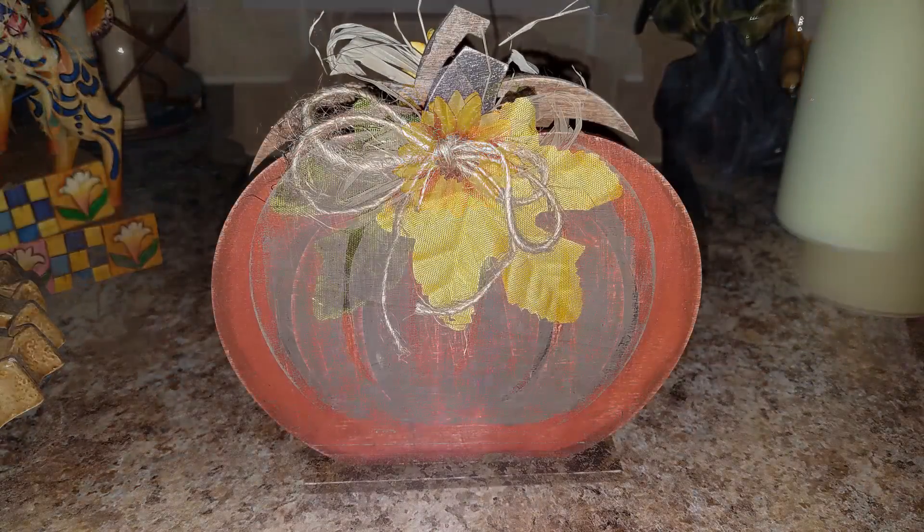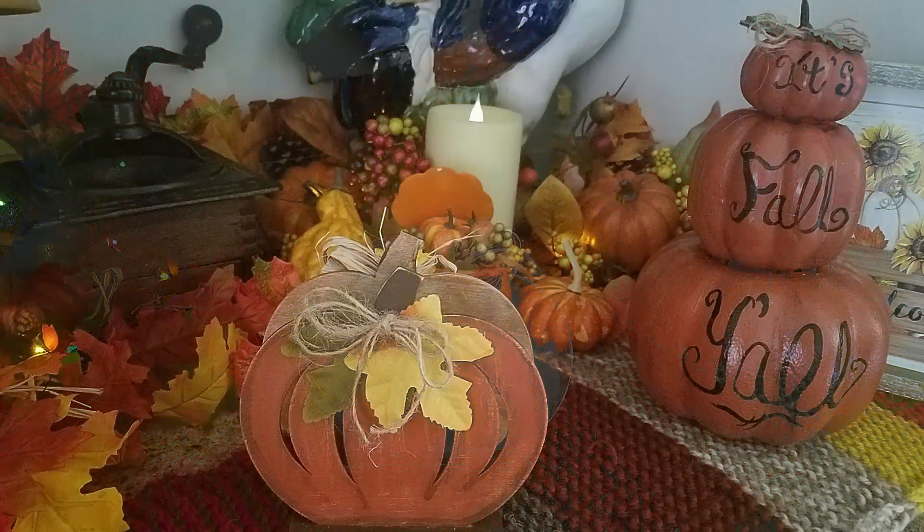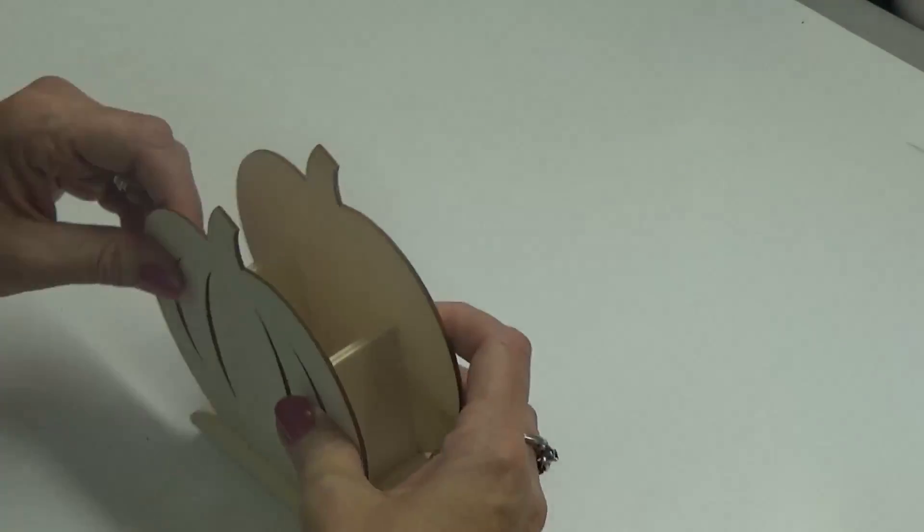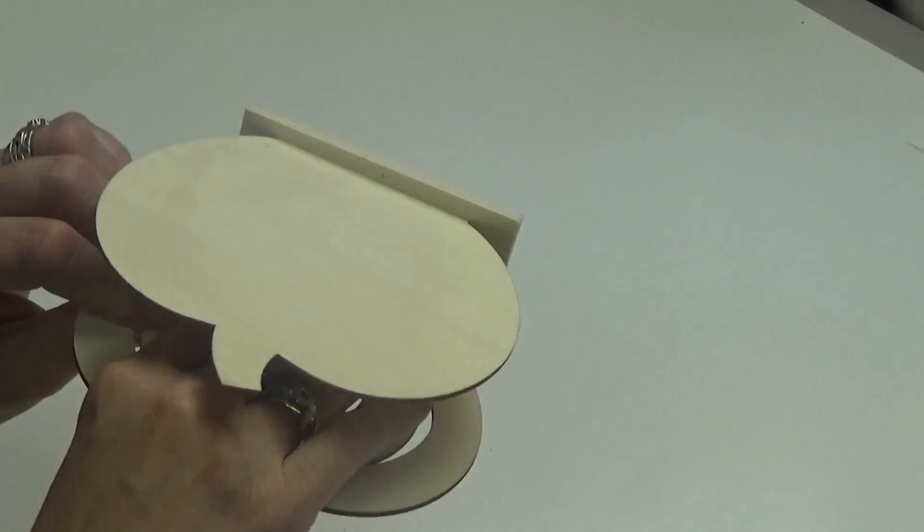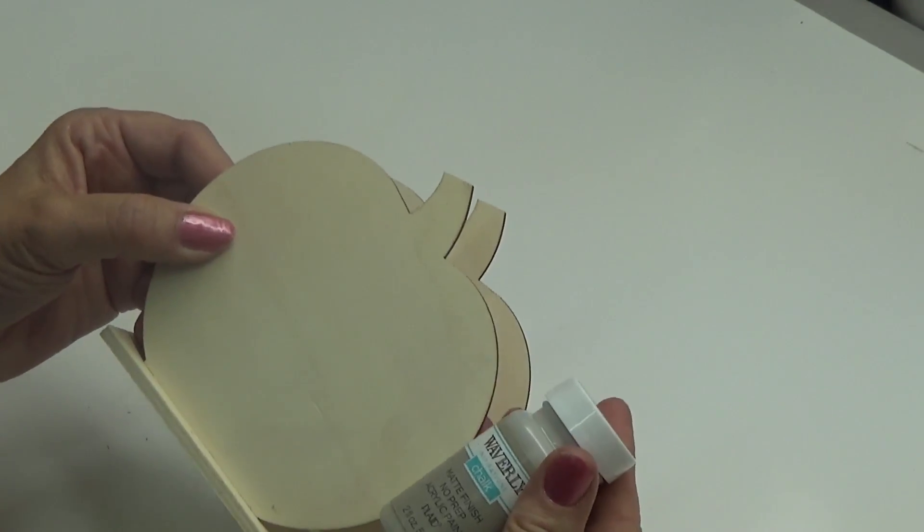Hey y'all, welcome to my craft shed. Today I'm going to be showing you how I painted this two-sided wooden box from Dollar Tree. I painted one side orange and the other side in a chalk paint color. This side I'm going to do orange, this I'm going to do in this chalk paint, it's like kind of a beige color.